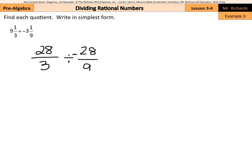Now we can keep change flip, so 28 divided by 3 multiplied by a negative 9/28. And this is where cross simplifying really comes in handy, because I can simplify the 28 and 28 by dividing by 28. So that becomes just 1 and 1. And I can even cross simplify the 3 and the 9. That becomes dividing by 3, 1 and 3.